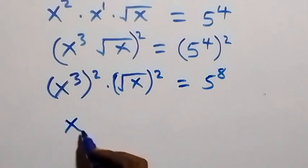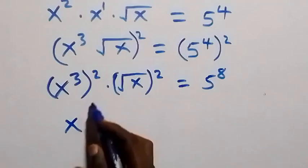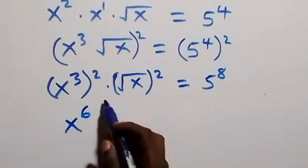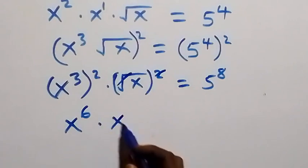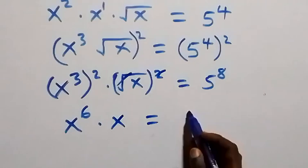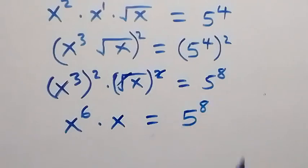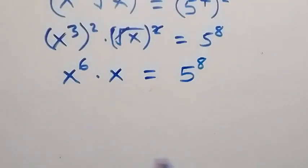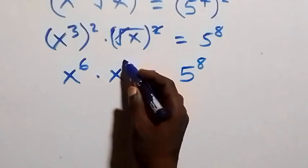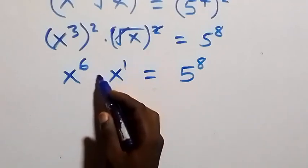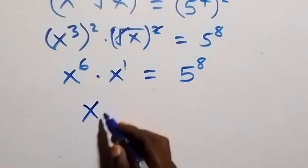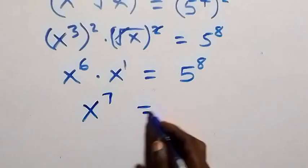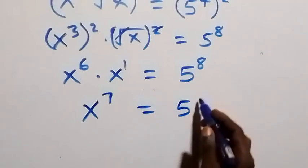So we have x raised to power 6, then this square cancels the square root, giving us times x, which equals 5 raised to power 8. Here it is also x raised to power 1, which implies — applying the law of indices — we have x raised to power 7, now equals to 5 raised to power 8.